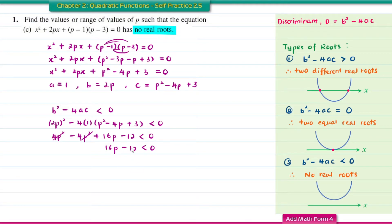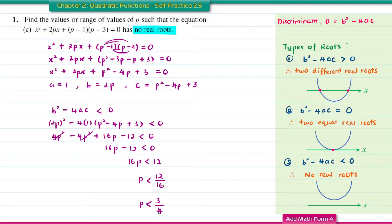Moving negative 12 to the right-hand side gives 16P less than 12, so P is less than 12 divided by 16. Simplifying, P is less than 3 over 4.